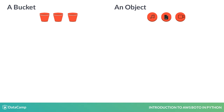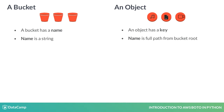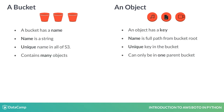Objects and buckets in S3 work somewhat like files and folders on our desktop. Each bucket has a name. Objects' names are called keys. A bucket name is just a name, while an object's key is the full path of the object from the bucket's root. A bucket's name is unique in all of S3, and an object's key is unique in the bucket. A bucket contains many objects, but an object can only belong to one bucket.